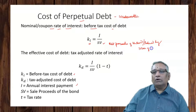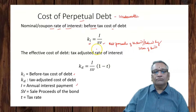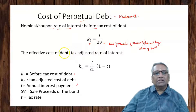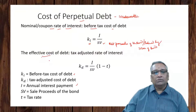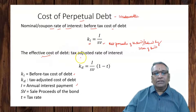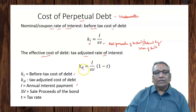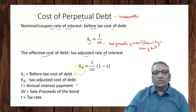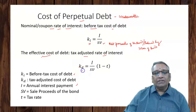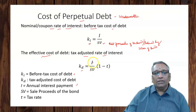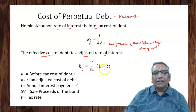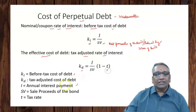The effective cost of debt is the tax-adjusted rate of interest. It is denoted as KD (cost of debt, tax adjusted), and is calculated using the same formula: annual interest payment divided by sale proceeds, multiplied by (1 minus tax rate T).